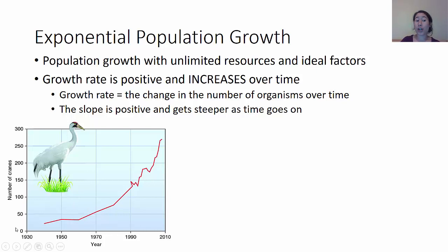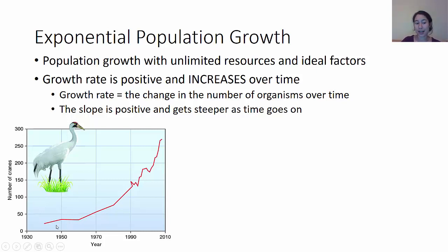Here's a graph of a number of cranes increasing over time in an exponential pattern. In exponential growth, the growth rate is positive — the slope is pointing upward — and the growth rate actually increases over time, meaning the increases are getting bigger every single year. The change from 1940 to 1960 is positive but not very steep, while from 1960 to 1980 we see a much bigger increase. From 1980 to 2000, the slope has gotten even steeper. In exponential growth, the slope will always be positive and increasingly steep over time.